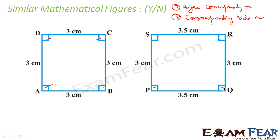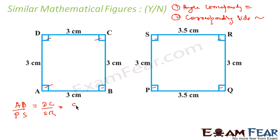The second condition is corresponding sides have to be proportional. So I will find AD by PS. I have to prove that AD by PS should be equal to DC by SR, and this should be equal to CB by RQ. I am just comparing the corresponding sides. When I am taking AD here, I am taking PS here, so I am saying AD by PS. When I am taking DC here, I am taking SR here — corresponding sides. When I am taking CB here, I am taking RQ here.